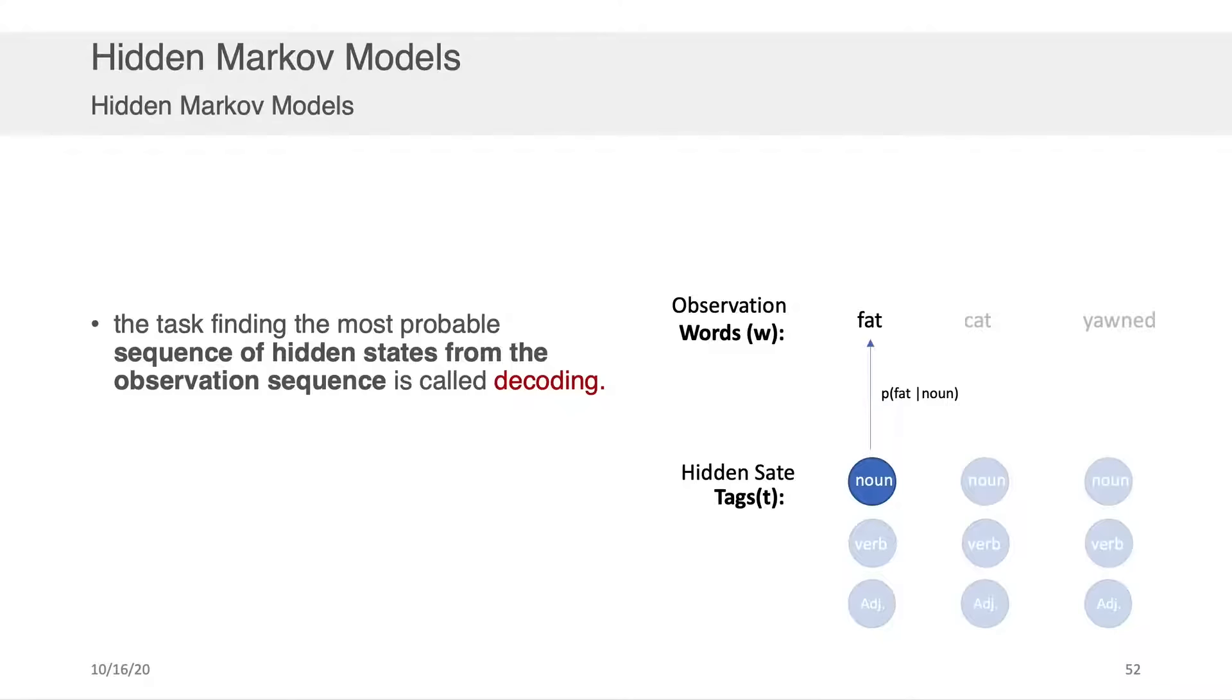So to be clear, decoding is complicated because if you want to find what the optimal set of tags are for fat cat yawned in this example, you have to compute the probability of fat given noun, then the probability of fat given verb, then the probability of fat given adjective, and you'd have to do this for all three of these. But not only that, you'd have to then say what's the probability of, given whatever the first word was, or the hidden state of the first word, the probability of transitioning to another kind of hidden state and tying that then back to the observation cat. So you can see how there's many possible paths that we could traverse here. And if we actually wanted to get the optimal sequence of tags, we would have to traverse every possible path here and that would get computationally expensive very quickly.